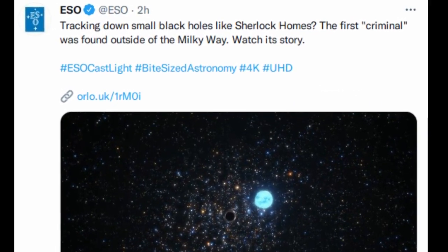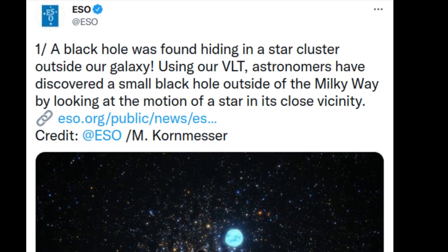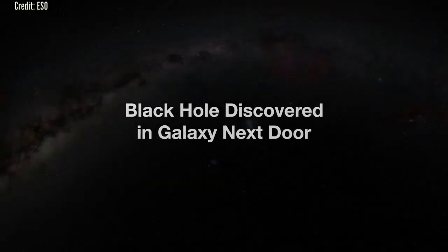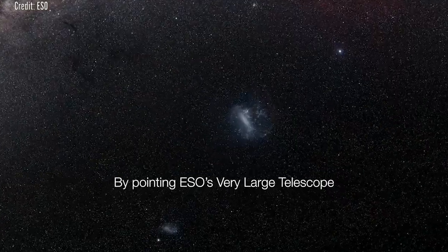Using the European Southern Observatory's Very Large Telescope, astronomers have discovered a small black hole outside the Milky Way by looking at how it influences the motion of a star in its close vicinity.